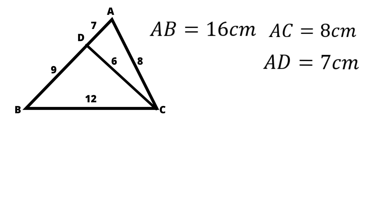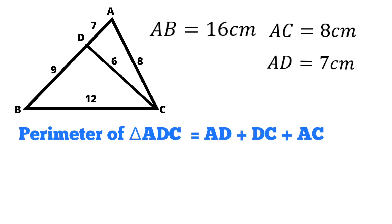Let's find the perimeter of both the triangles. Perimeter of triangle ADC equals AD plus DC plus AC which is equals to 7 plus 6 plus 8 equals 21 centimeter.